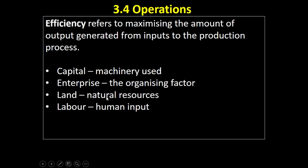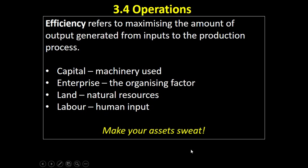Efficiency refers to getting the most out of capital and land, which is the natural resources put into the production process. Land isn't just the physical ground the building is on — it also includes any natural materials and natural resources used in the production process. Labor is the human input, and enterprise is the organizing factor — the management — that brings all of these factors of production together.